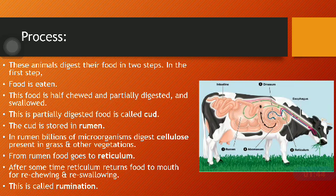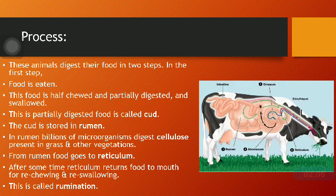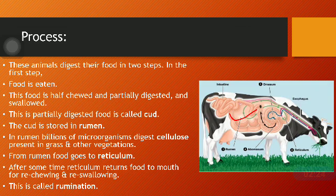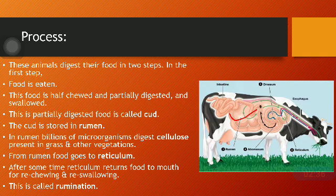The digestion process in ruminants takes place in two steps. In the first step, food is eaten, half-chewed, and partially digested before being swallowed. This partially digested food is called cud. The cud is stored in the rumen, the largest section of the digestive system. In the rumen, billions of microorganisms digest cellulose — a special carbohydrate present in grass that human beings cannot digest at all.